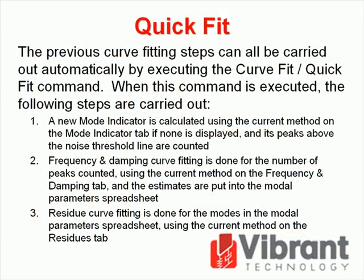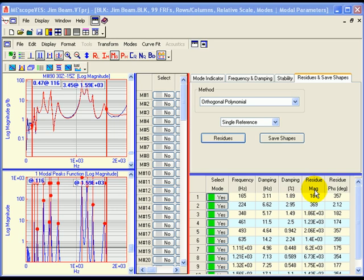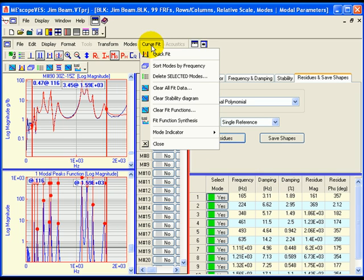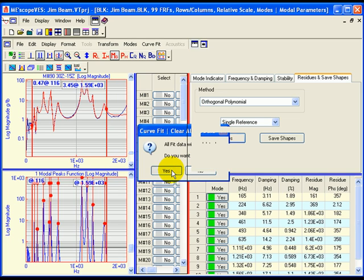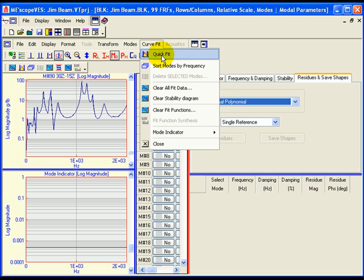The previous curve fitting steps can all be carried out automatically by executing the curve fit quick fit command. When this command is executed, the following steps are carried out. One, a new mode indicator is calculated using the current method on the mode indicator tab if none is displayed, and its peaks above the noise threshold line are counted. Two, frequency and damping curve fitting is done for the number of peaks counted using the current method on the frequency and damping tab, and estimates are put into the modal parameter spreadsheet. Three, residue curve fitting is done for the modes in the modal parameter spreadsheet using the current method on the residues tab. To perform a quick fit of the 99 FRFs in the data block window, execute curve fit, clear all fit data, and click on yes to clear all of the curve fitting data from the data block. Then execute curve fit, quick fit. When quick fit has completed, the curve fitting results will be displayed.